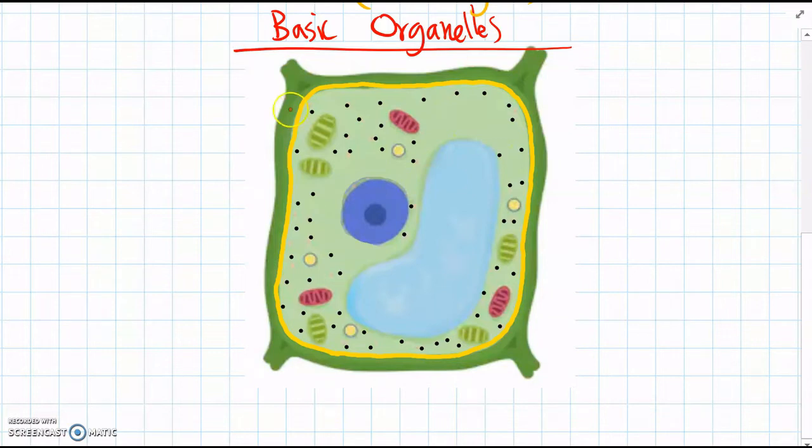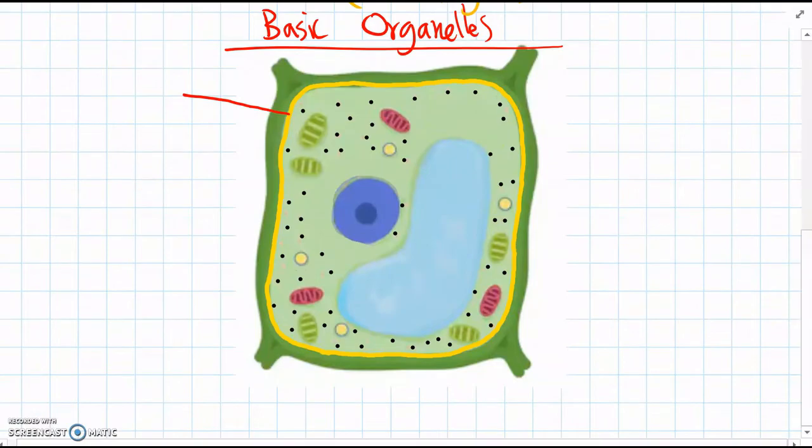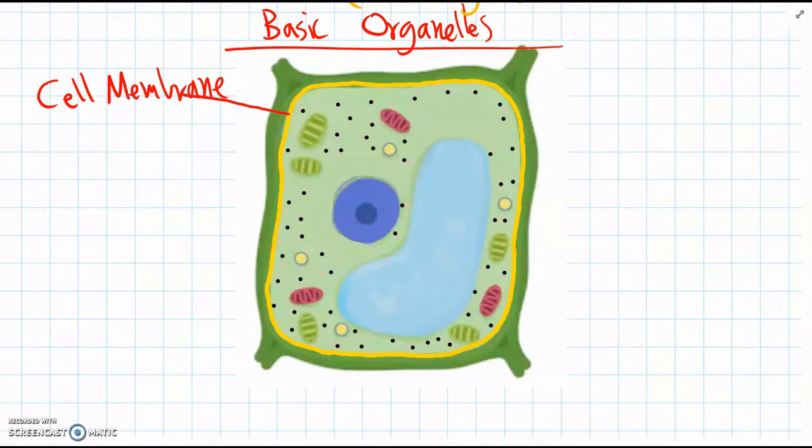Starting from the outside of the cell, we have this yellow structure here which is called the cell membrane. And the cell membrane is like the outer layer that holds everything in.